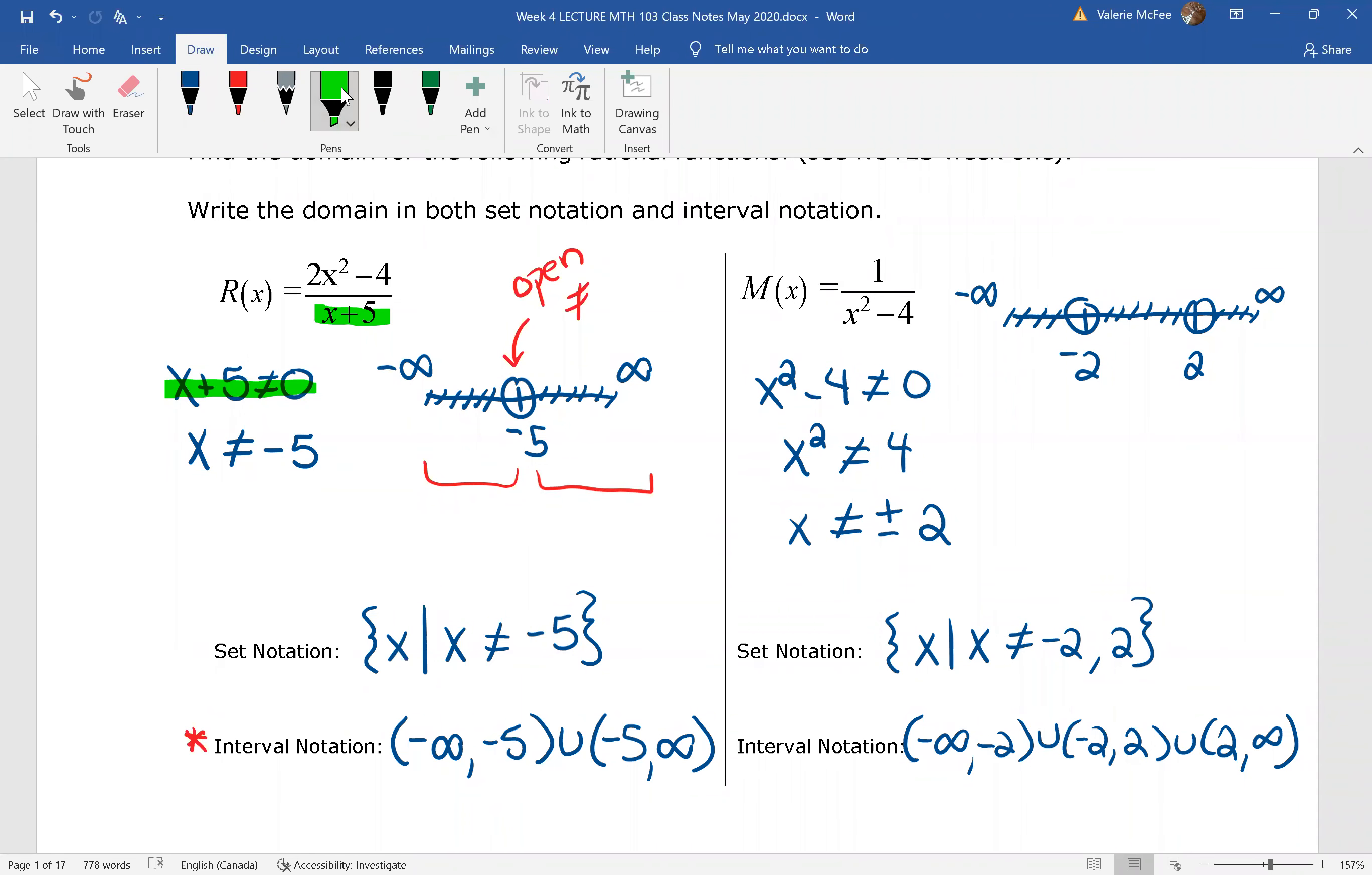For M(x), we're again looking at the denominator. The denominator cannot equal zero. I use the square root method here. And of course, you had to remember when you take the square root of both sides, you need the positive and negative root. We're using open brackets because x cannot equal negative two or positive two.